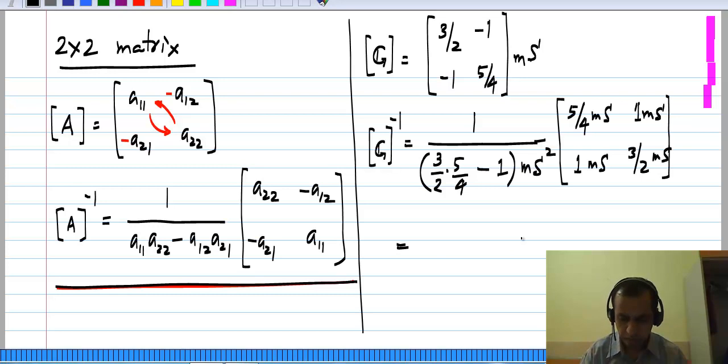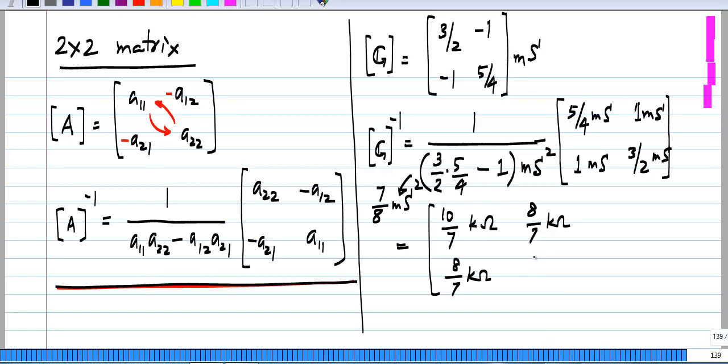And this whole thing will be equal to if I simplify this I get 7/8 millisiemens squared. So I have 8/7 and 8/7 millisiemens squared times all of these entries which will give me 10/7 kilo ohms. I get this kilo ohms because I have millisiemens divided by millisiemens squared, 8/7 kilo ohms. And this is what I used, I multiplied the current source vector with this matrix to get the node voltages.